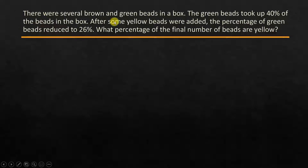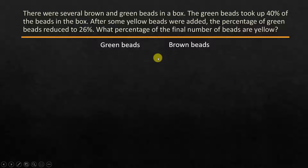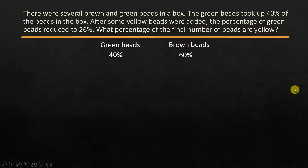So first, there were several brown and green beads. Initially there's only brown and green beads in the box. Green beads is 40% of the total number of beads, whereas brown beads is 60% of the total number of beads.